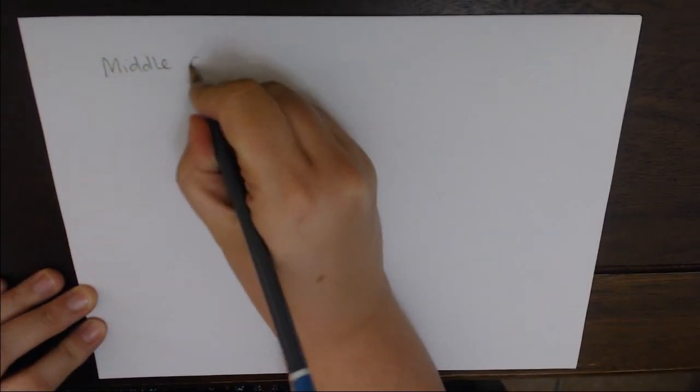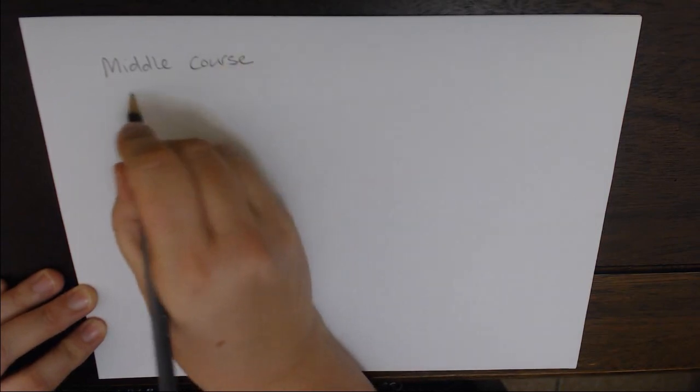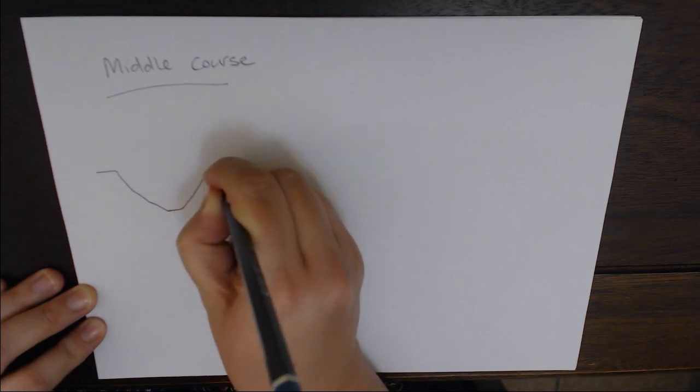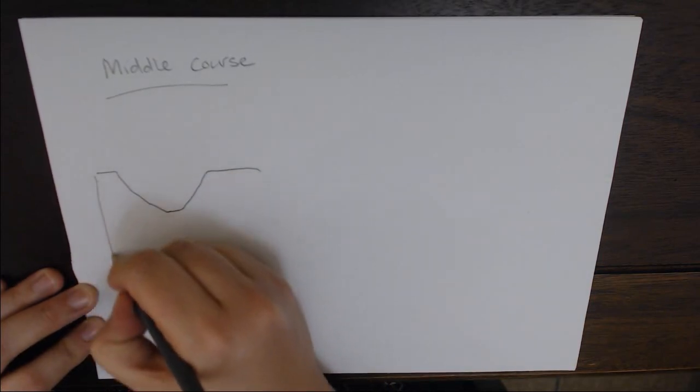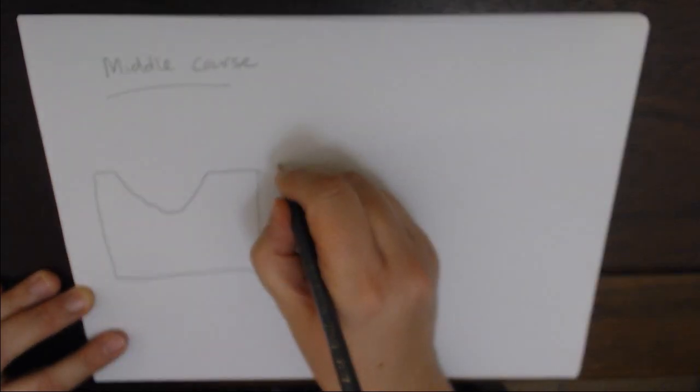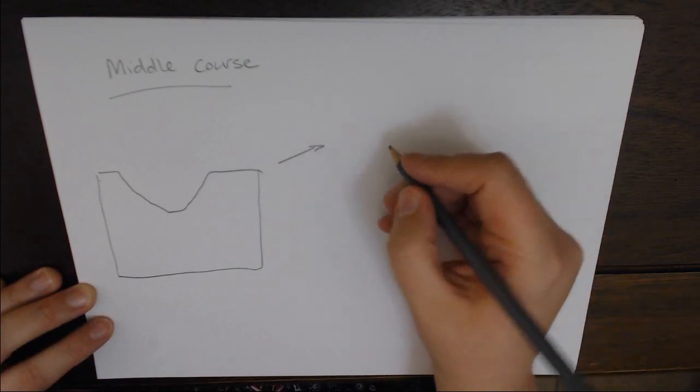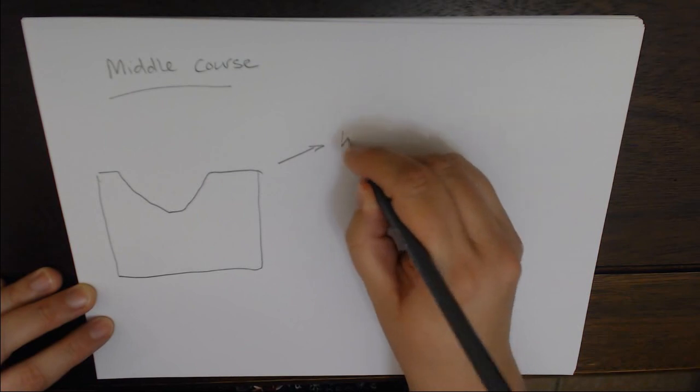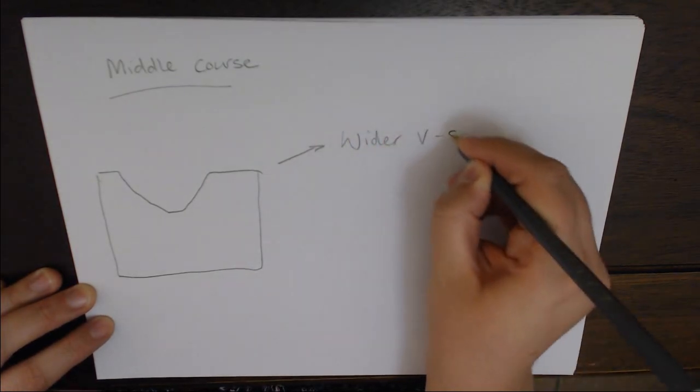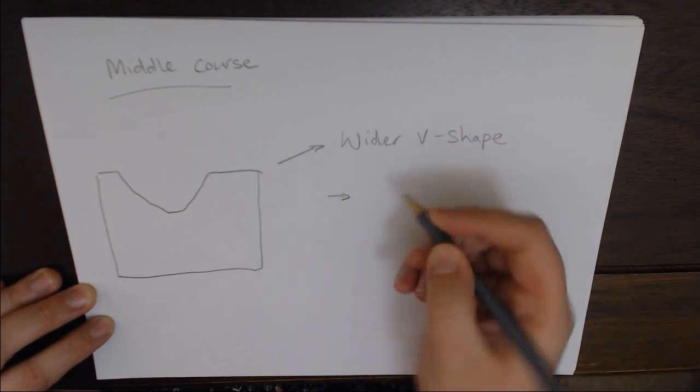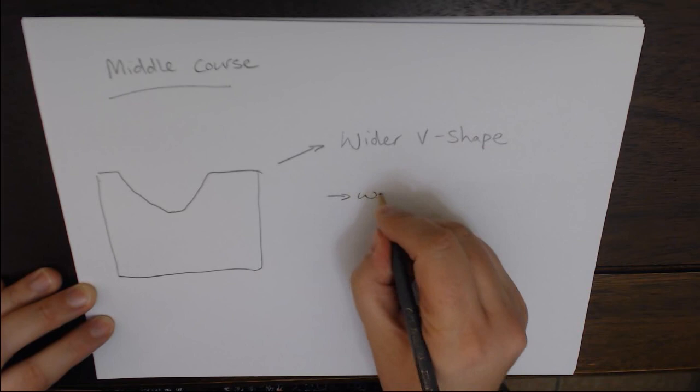The next one we're going to look at is our middle course of the river. So tributaries have joined in here, and so the volume of water that's being carried is quite a bit bigger than with the upper course. We've got that V-shape still, but it's a lot wider. The river banks are eroding laterally, and the open V is what we use to describe this wider V-shape. It's got a medium gradient and is just generally wider than your upper course.